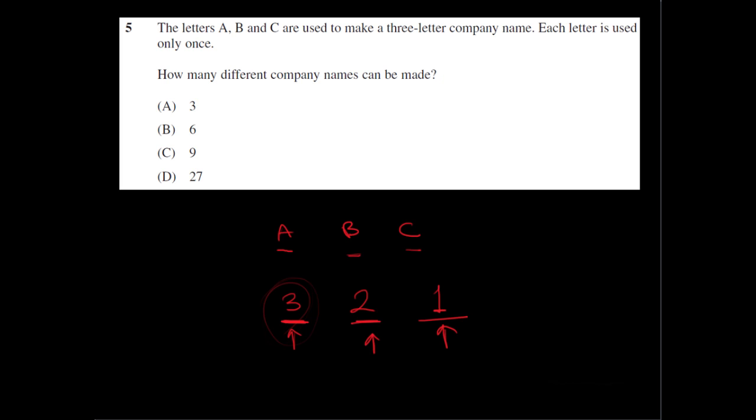And using the multiplication principle, if I multiply it, I get all the different company names that can be made with these three letters. So it's three times two is six. Six times one is six. So there's six different company names that can be made. So the answer is B.